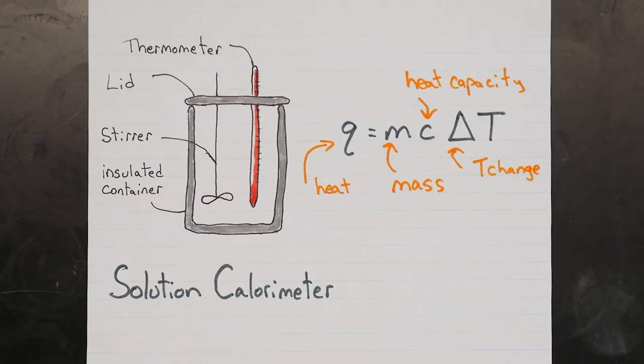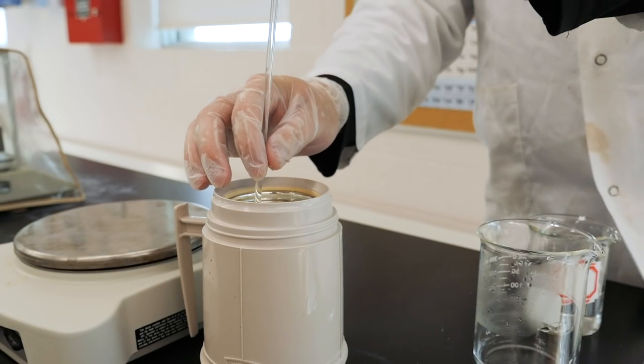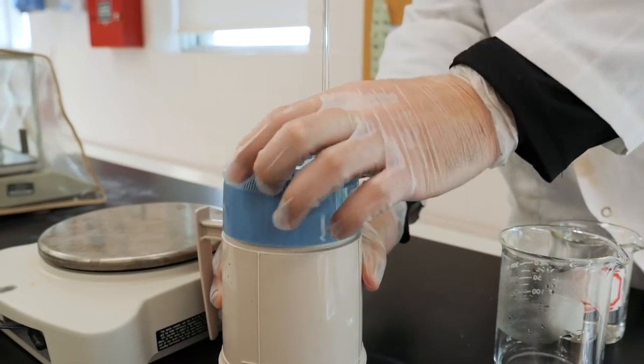Unfortunately, no calorimeters are perfectly adiabatic, meaning that they don't perfectly insulate what's inside. Therefore, the calorimeter itself will actually absorb some heat energy, and this has to be taken into account.